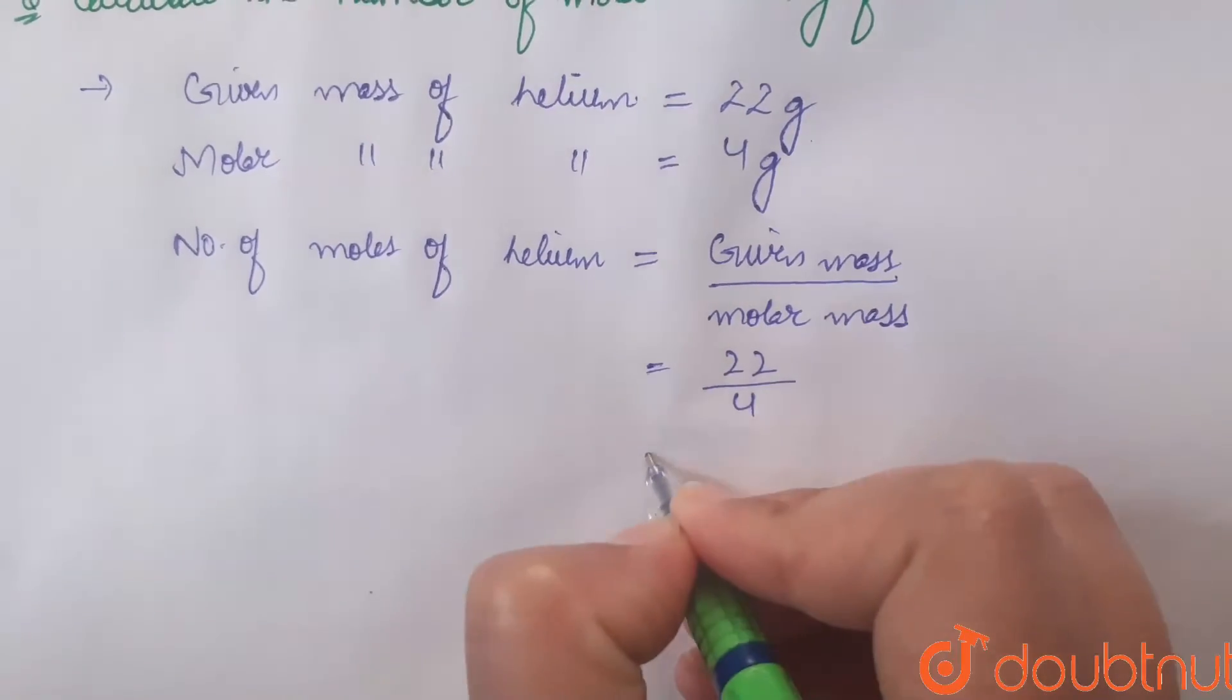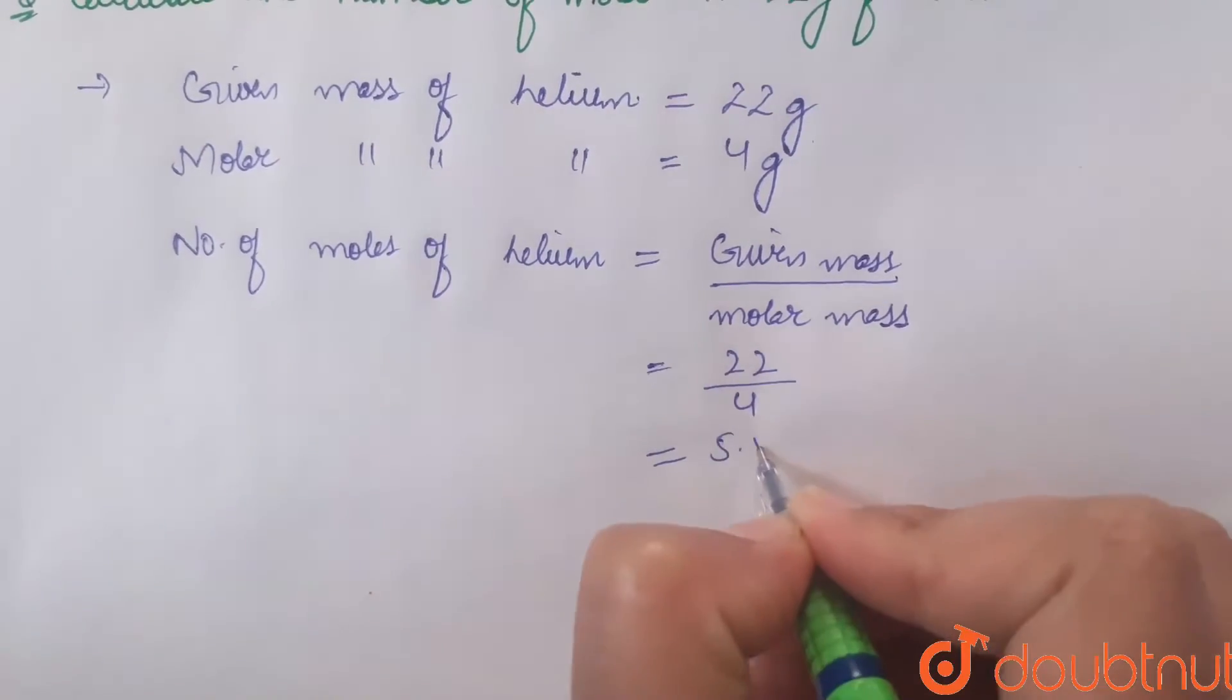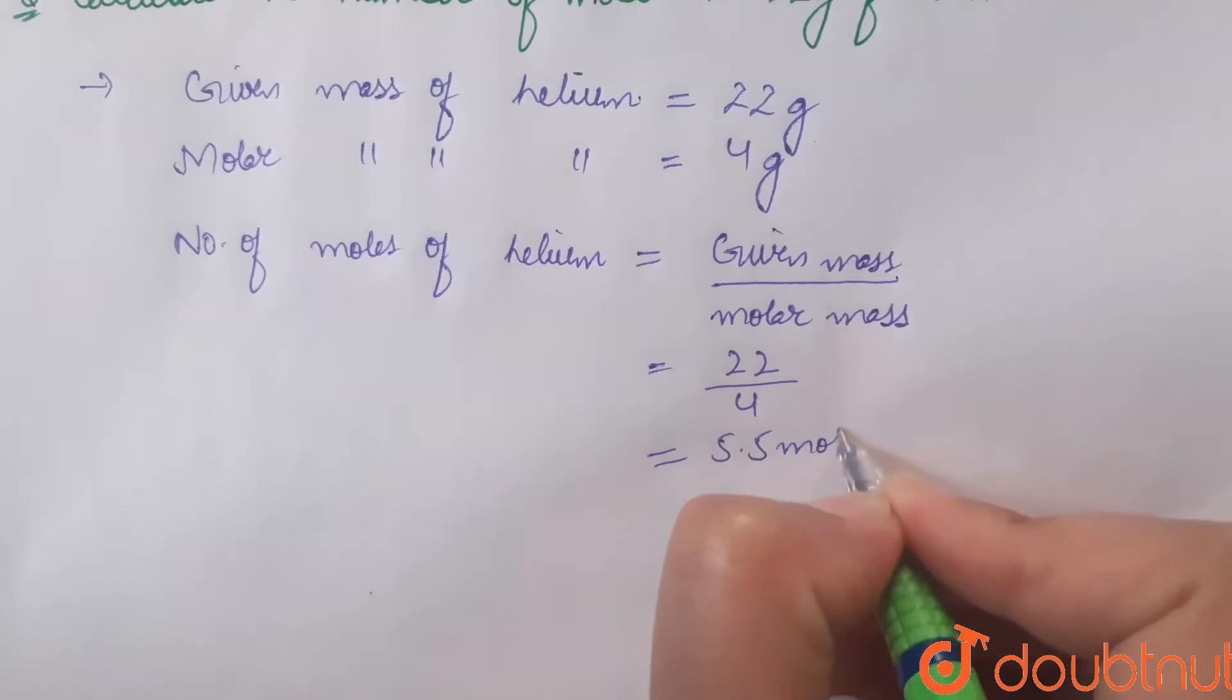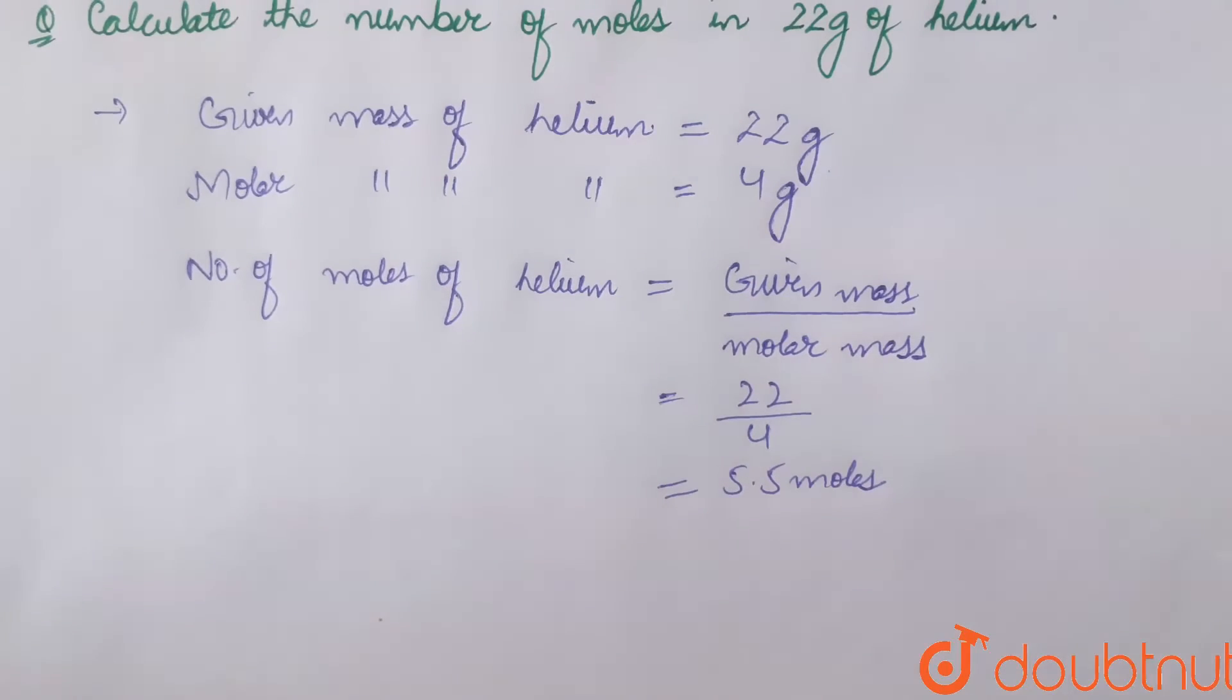...upon 4, that equals to 5.5 moles. Thus the number of moles in 22 grams of helium are 5.5 moles.